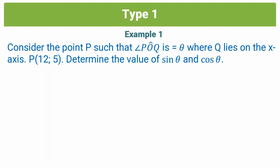For example 1, we are asked to consider a point P such that angle POQ equals theta, Q lies on the x-axis, and P is the point (12, 5), where 12 represents our x and 5 represents y. We are asked to determine the value of sine theta and cos theta. Step 1 is to plot these points on a Cartesian plane. We're dealing with the first quadrant because the points 12 and 5 lie in the first quadrant, so we'll plot that point roughly at (12, 5).